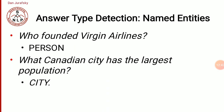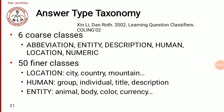Answer type detection uses named entities: 'Who founded Virgin Airlines?' — answer type is person. 'What Canadian city has the largest population?' — answer type is city. The answer type taxonomy has six coarse classes: abbreviation, entity, description, human, location, and numeric. At a finer grain, there are 50 classes. For location: country, city, mountain. For human: group, individual, title, description. For entity: animal, body, color, currency. For numeric: date, distance, percentage, size, money, etc.